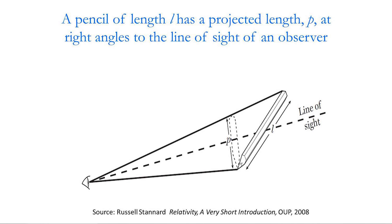The reason you're seeing different lengths is because the pencil has got an extension into a third dimension along the line of sight. And when we take account of this, we will all arrive at the same length of the pencil — its length in three dimensions. So the correct length is what you observe, which is perpendicular to your line of sight.